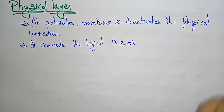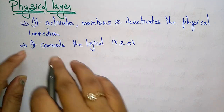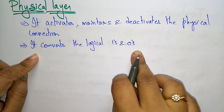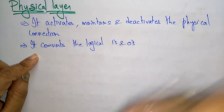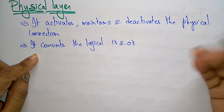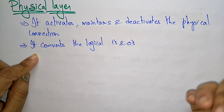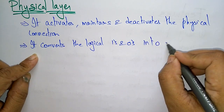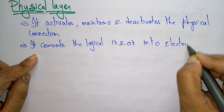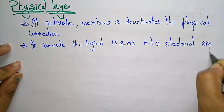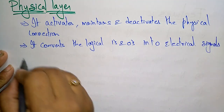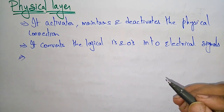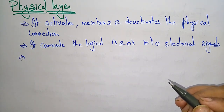Whatever data the data link layer is sending in the form of frames — it stores the data in the form of frames and sends the bits. So this physical layer converts the logical ones and zeros coming from the layer above into electrical signals.